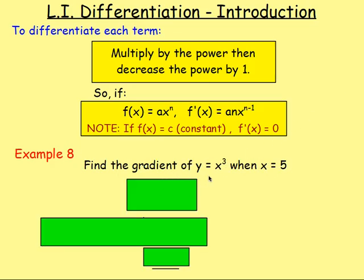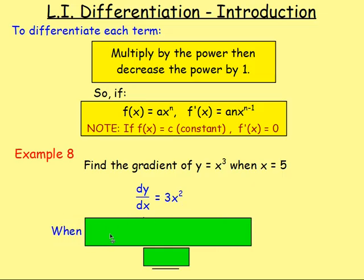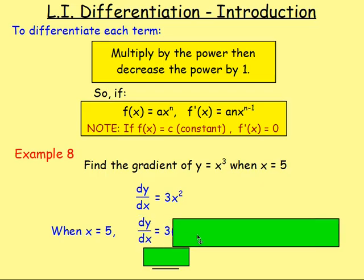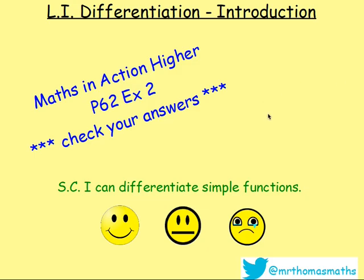Example 8: Find the gradient of y = x³ when x = 5. Remember, differentiation is used to find the gradient. Differentiating y gives dy/dx. Multiply by the power: 3 times 1 is 3, and x³ becomes x². So dy/dx = 3x². Now we know x = 5, so we replace x with 5: 3 times 5² gives 3 times 25, which is 75. That is a quick introduction to differentiation. Give these questions a shot and see if you can differentiate some simple functions. Good luck!